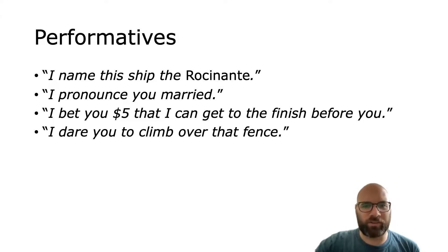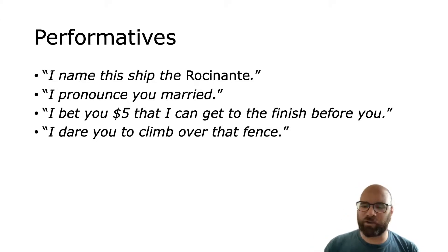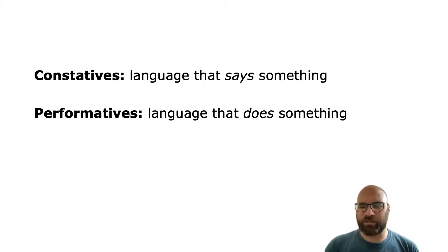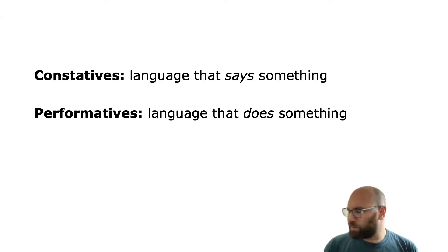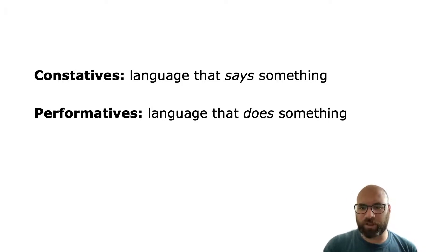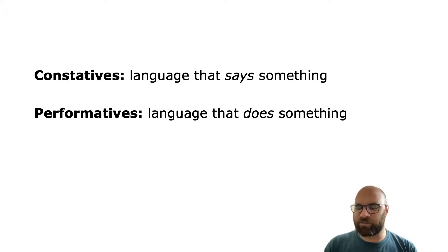These are a special kind of utterance that were once called performatives, or performative utterances — utterances we use to perform some kind of action. When people started thinking about this, they proposed dividing all language into two types. First, we have constatives, which are language used to say something, like 'the cat is on the mat' — an utterance that just conveys information. On the other hand, we have performatives, which are language that does something.